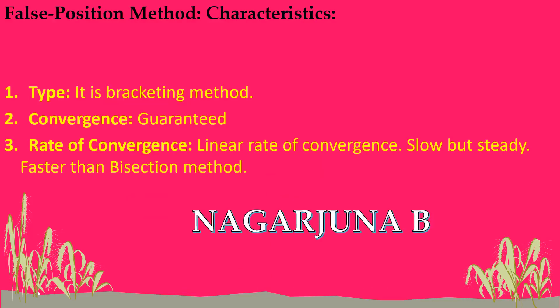Let us know about the characteristics of the false position method. The first one is type: to find the root of an equation, the false position method uses a bracketing method. The bracketing method means that while calculating the root of an equation, we consider intervals every time — an interval within values a and b such that f(a) and f(b) are of opposite signs. That process is called a bracketing method, and it provides convergence guarantee.